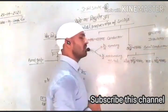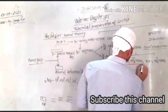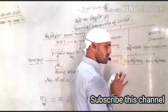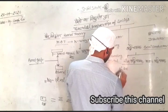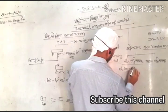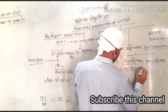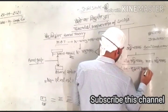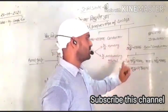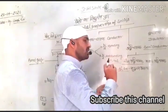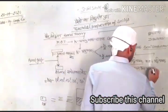Intrinsic Semiconductor or Extrinsic Semiconductor. Semiconductor — I don't call it Nijon. This is the third and third group.